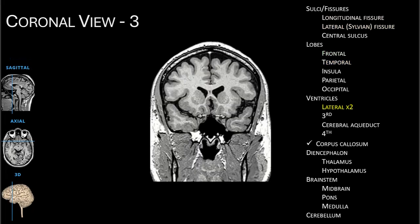Even further posterior, we see the lateral ventricles with the gray matter of the basal ganglia just below and the corpus callosum just above, where the white matter of axons allow the two hemispheres to communicate. You can still see the longitudinal and lateral fissures. Deep to the lateral fissure is a brain region called the insula, which we see just above the temporal lobe.